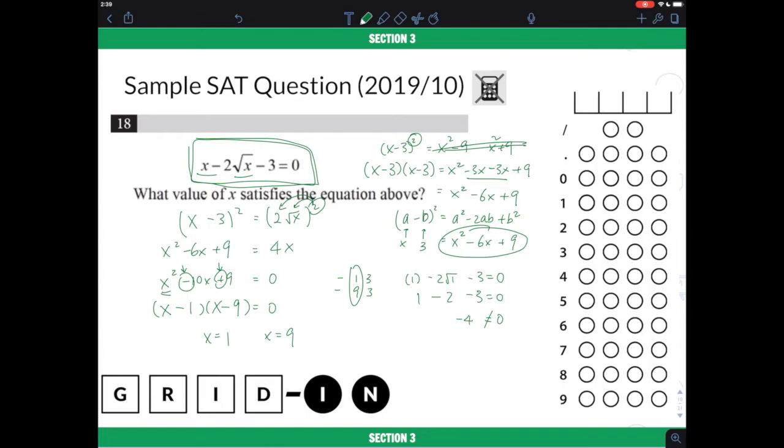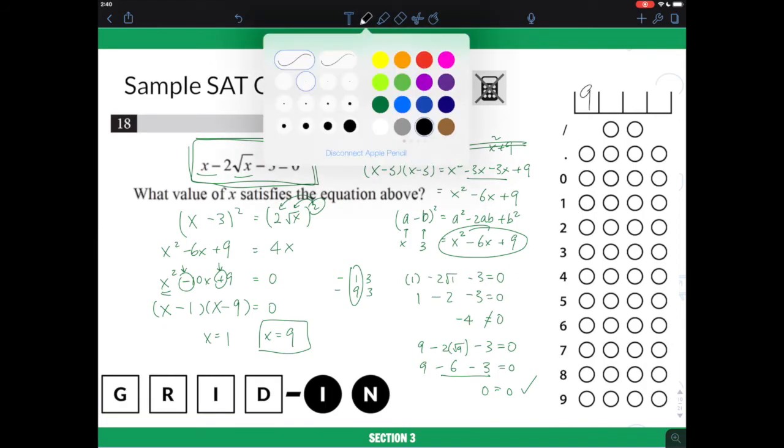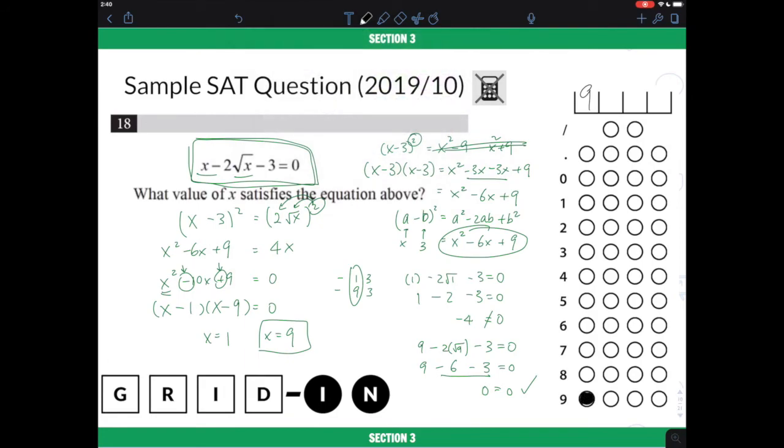So one way we will fix this is to try the other one. Let's try the 9. So 9 minus 2 times square root of 9 minus 3 equals to 0, so 9 minus 2 times square root of 9, which is the same thing as 2 times 3, which is 6 minus 3, and you will see that this is negative 9, so 9 minus 9 is 0. So this is true, so we will put in our answer as 9 right here, and we will bubble in our answer 9 right here. So this will be our answer.